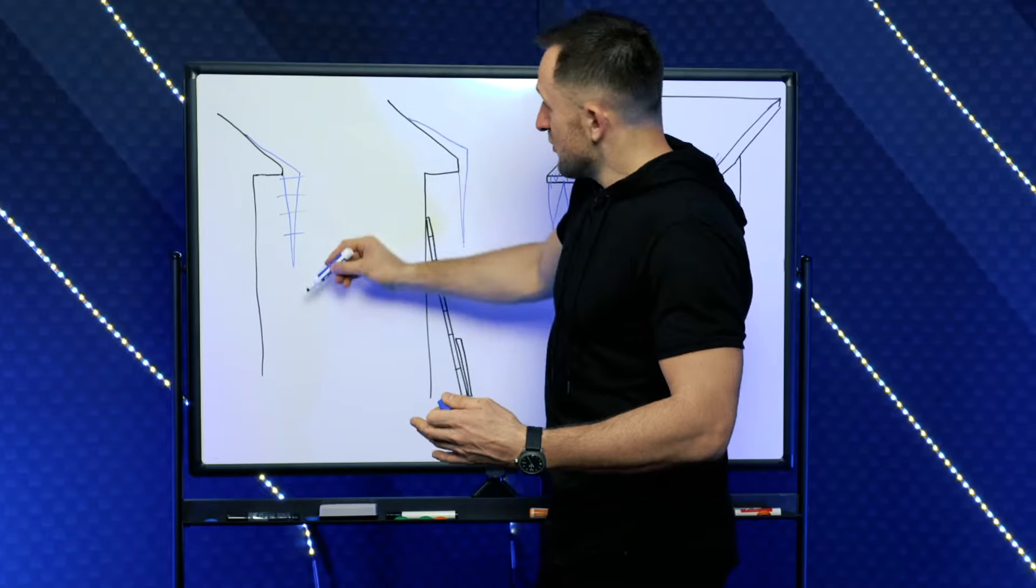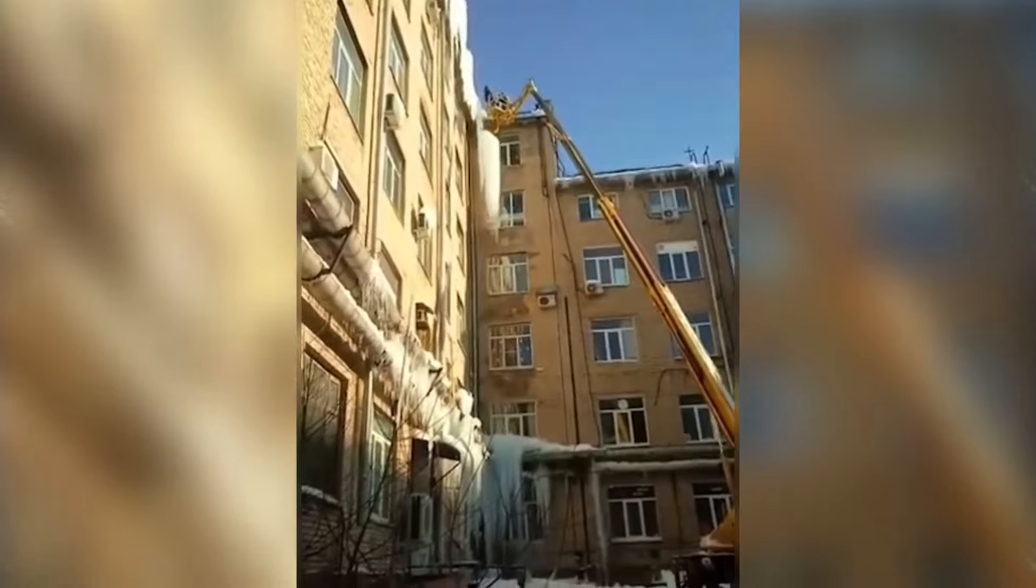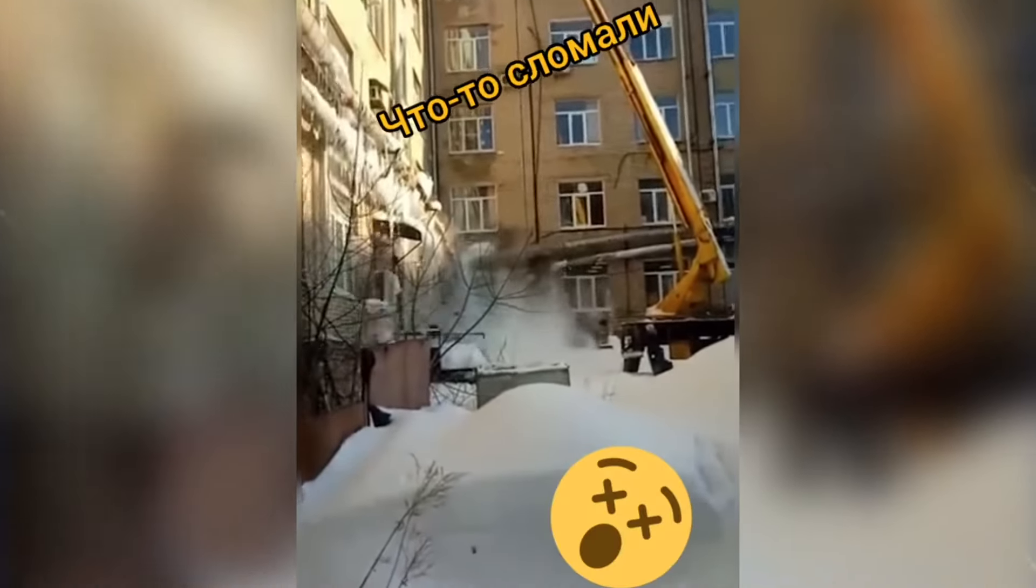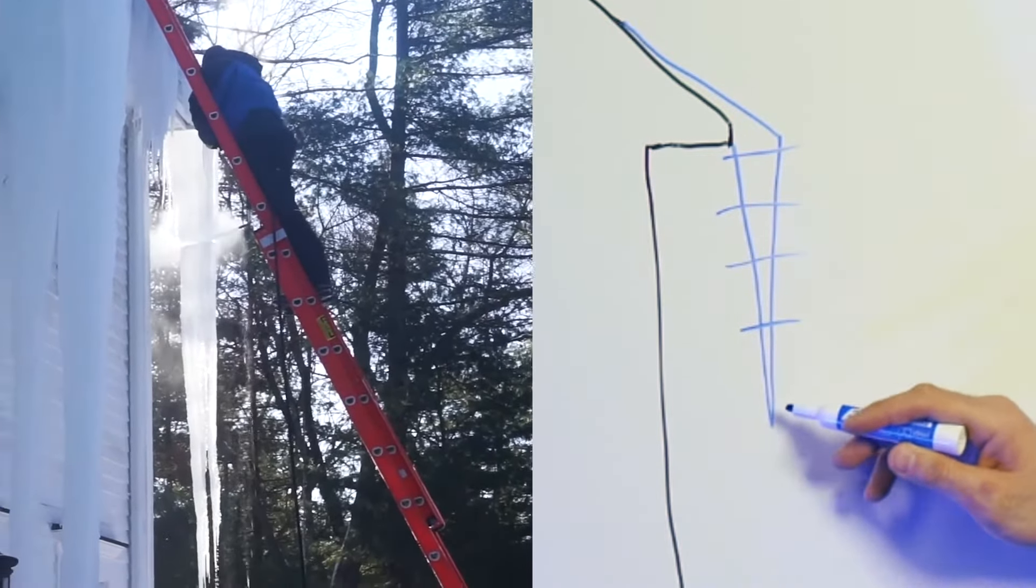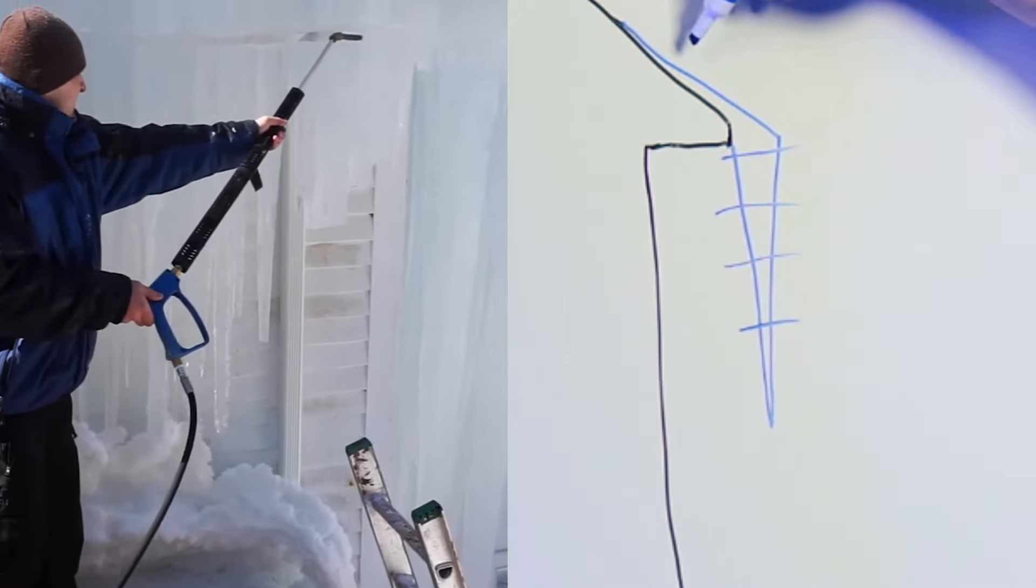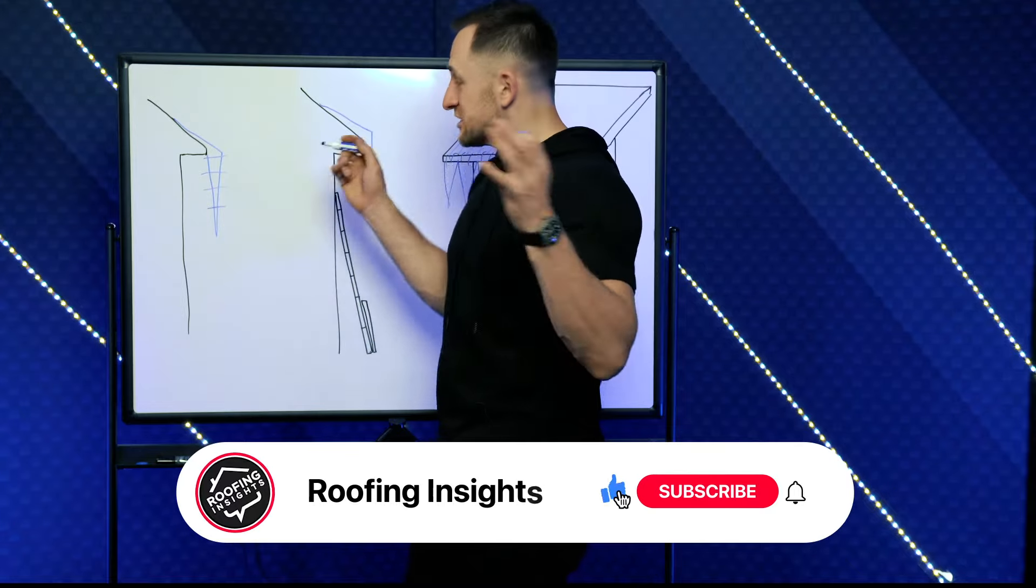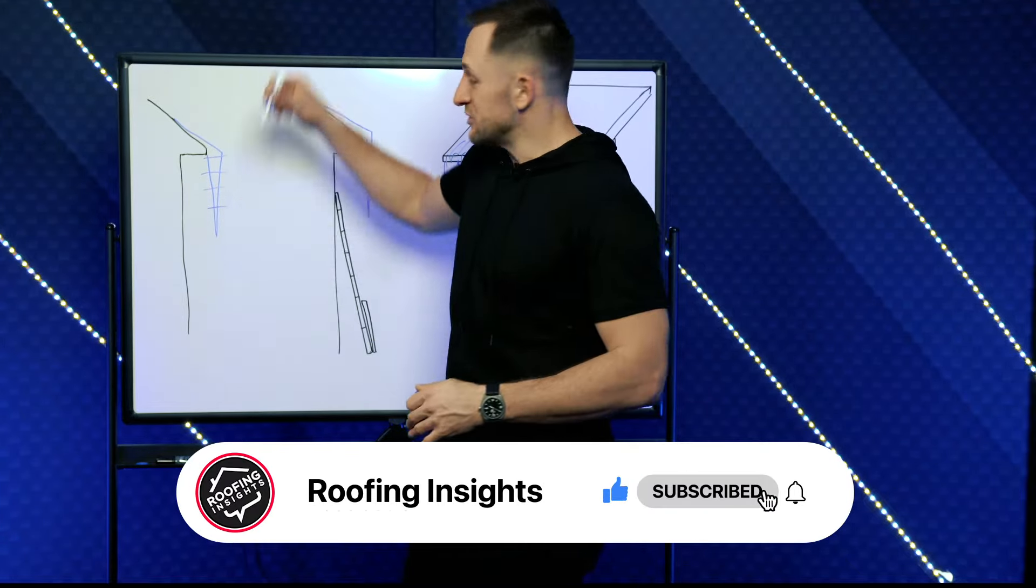Now if this thing weighs 500 pounds, it's a lot of ice and it will destroy everything below it. You can cut it into 50 to 100 pound pieces until you're all the way at the top. It might take a little bit longer but it's worth it because you're not going to get as much damage down below.